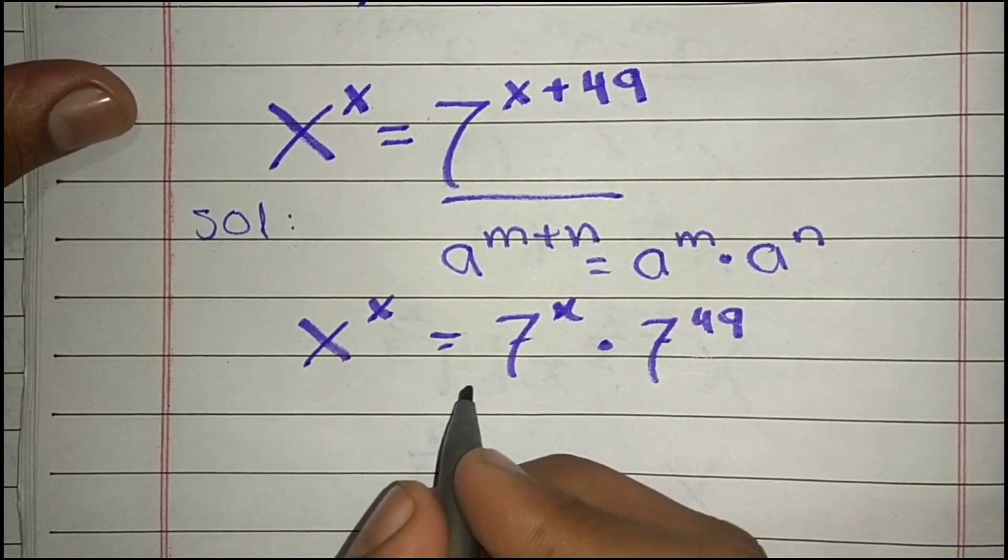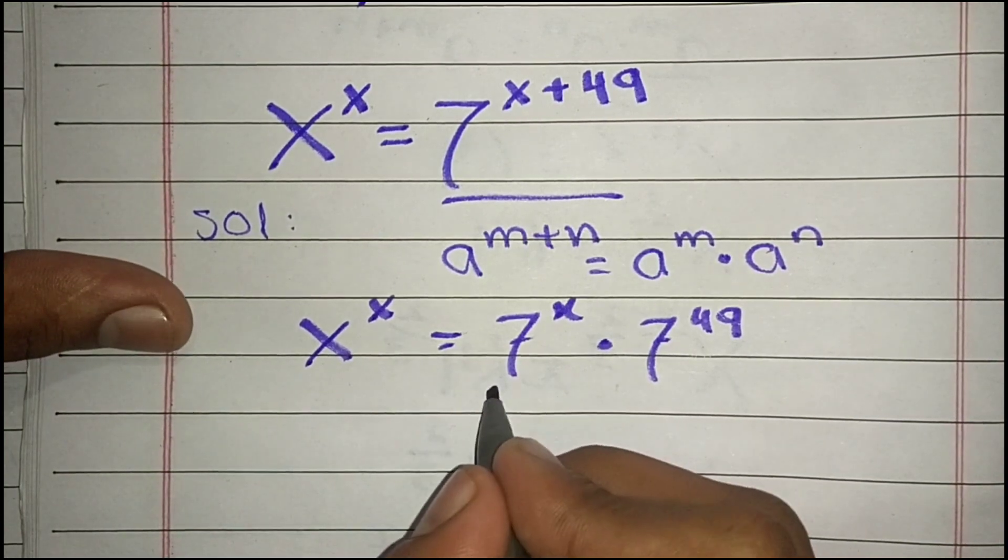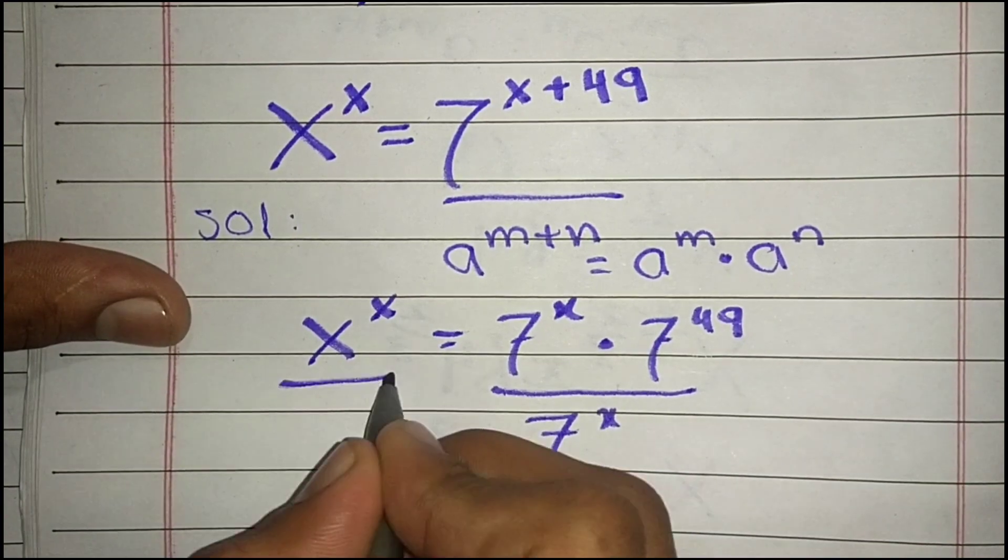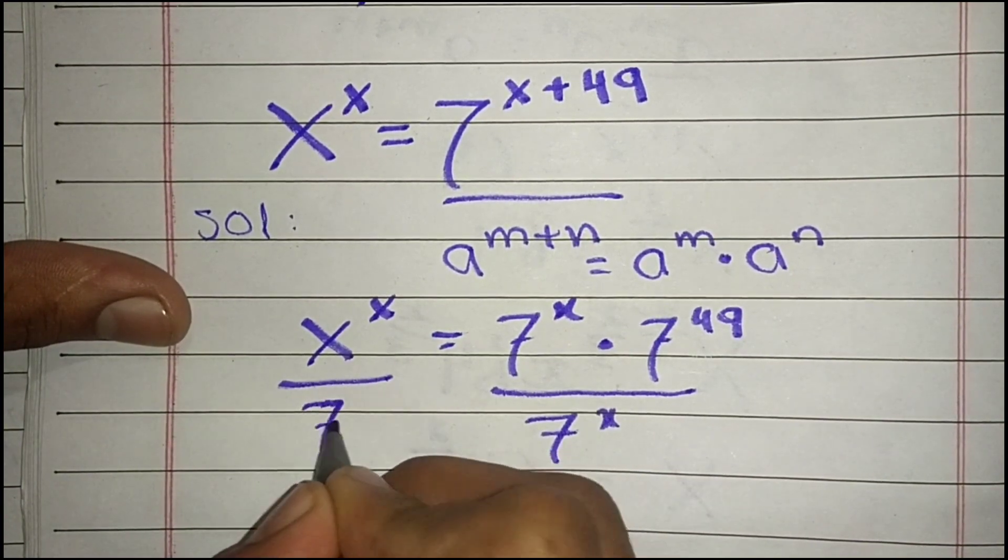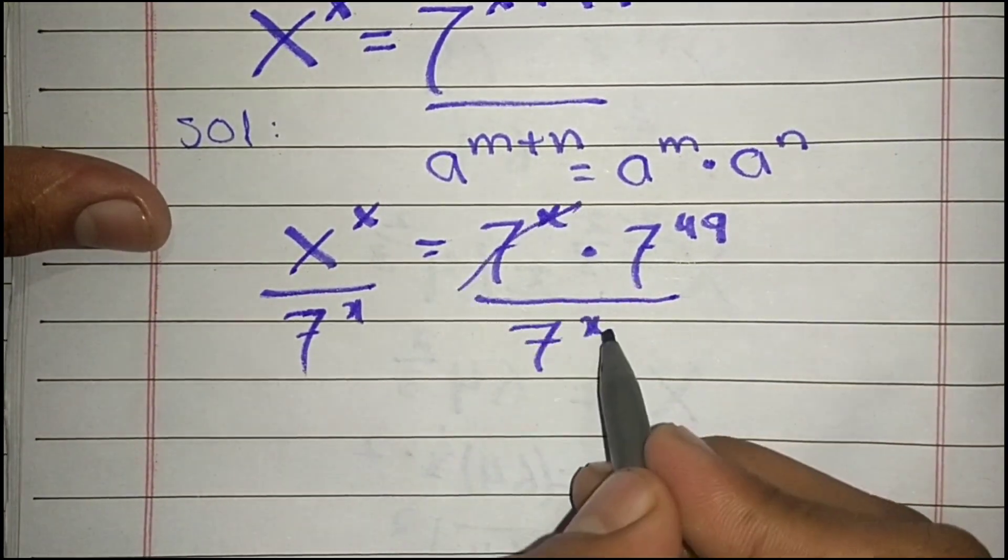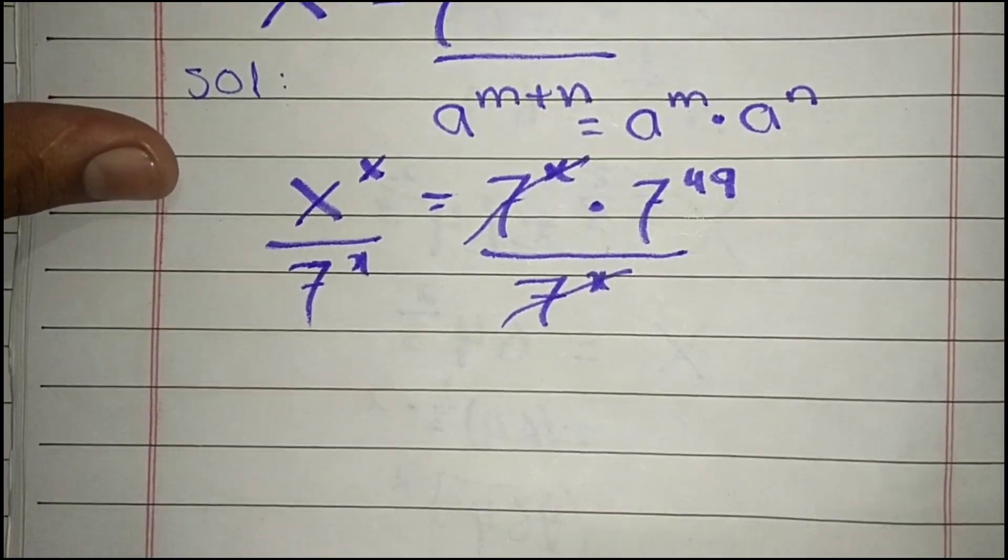Now to shift the variable to this side we divide both sides by 7^x. Here 7^x gets cancelled with 7^x in the denominator.